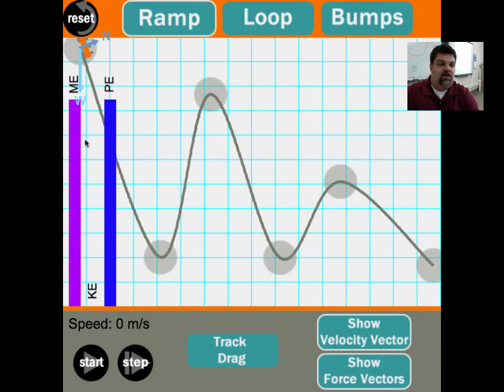And so I'm going to reset that, and we're going to do one little step at a time. By clicking on it one step at a time, I'm just clicking the step button, we see that as the potential energy decreases, the kinetic energy increases. And if you add the kinetic energy plus the potential energy, what does it equal? Mechanical energy.